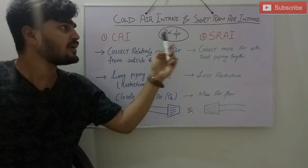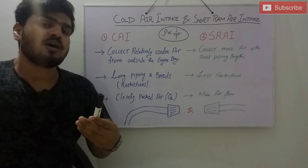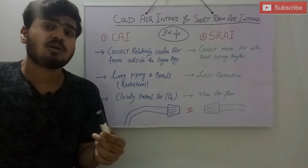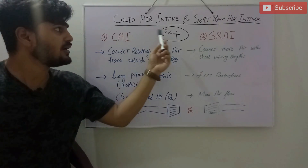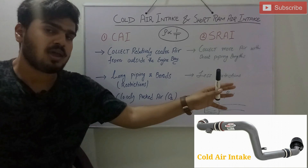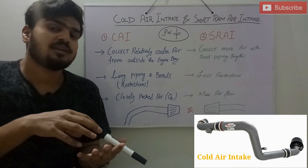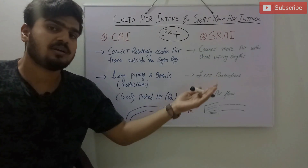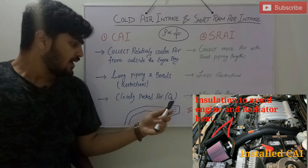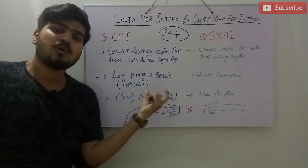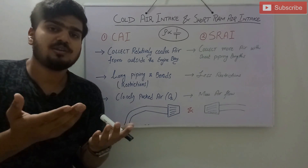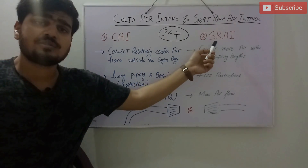As I mentioned, cold air intake and short ram air intake are two types of aftermarket air intake systems by which you can upgrade your car for producing more power. Starting with the cold air intake system — as the name indicates, it draws air from outside of the engine bay, because the air inside the engine bay is relatively hotter than the environment. The main purpose is to draw cooler air from outside, where oxygen molecules will be more closely packed together, providing more oxygen for better combustion, which will eventually increase your engine power.